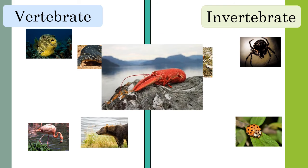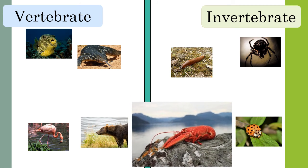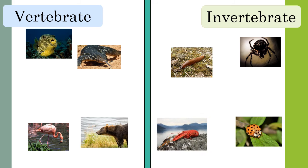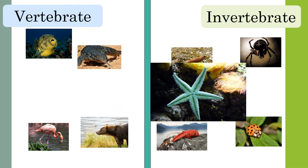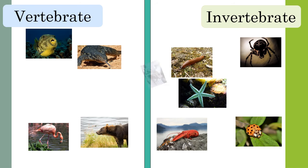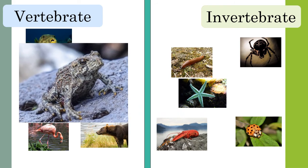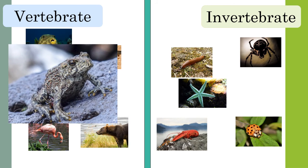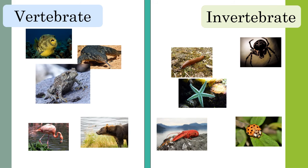What about the lobster? A lobster is a type of crustacean and belongs to the invertebrate group. Which group does a starfish belong to? A starfish has a calcareous skeleton and belongs to the invertebrate group. Finally, which group does a toad belong to? A toad is a type of amphibian — all amphibians have backbones, so it belongs to the vertebrate group.